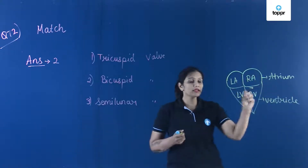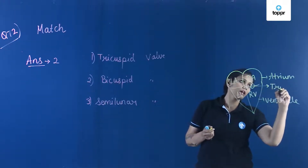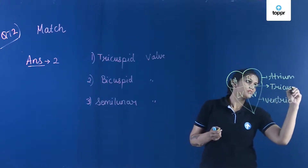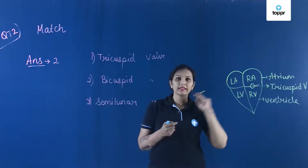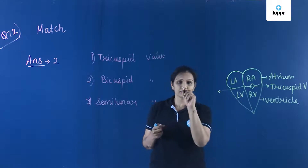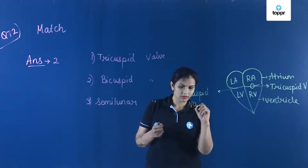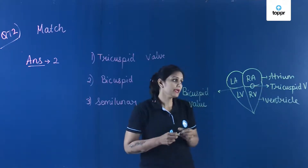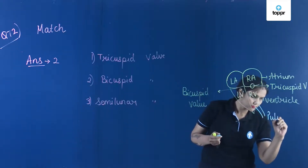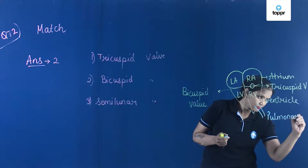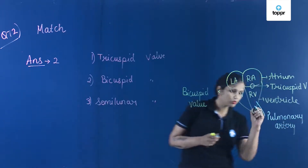The right atrium and the right ventricle have the tricuspid valve between them. Next, in between the left atrium and left ventricle there is the bicuspid valve, and in between the right ventricle and pulmonary artery there is the semilunar valve.